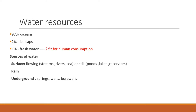Before we go to water pollution, let us have a look at the water resources that we have. We have 97% of the water in the oceans, 2% in the ice caps, and only 1% is fresh water. Within this 1%, we have contaminated or polluted the water to such an extent that less than 0.1% is fit for human consumption.